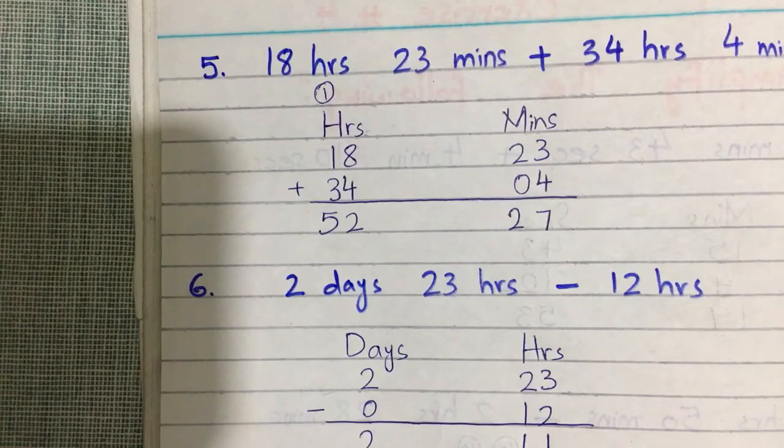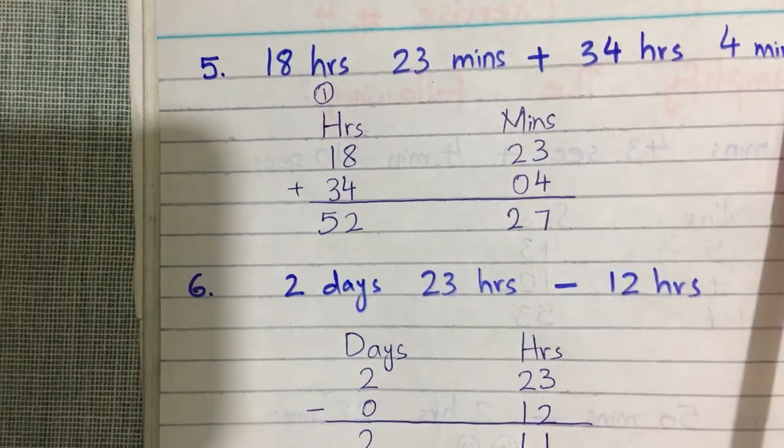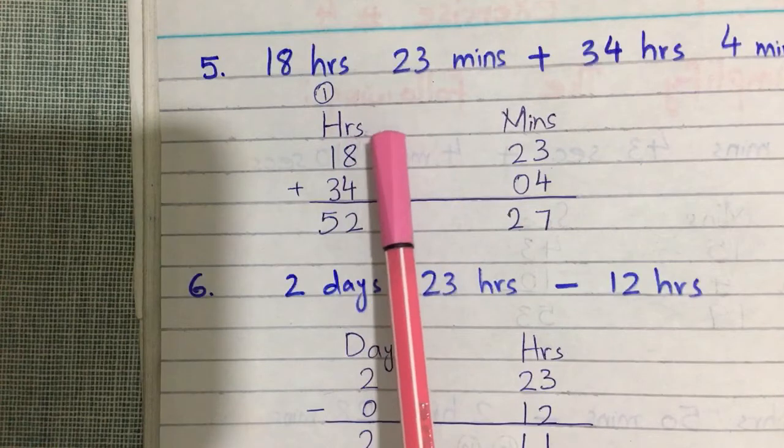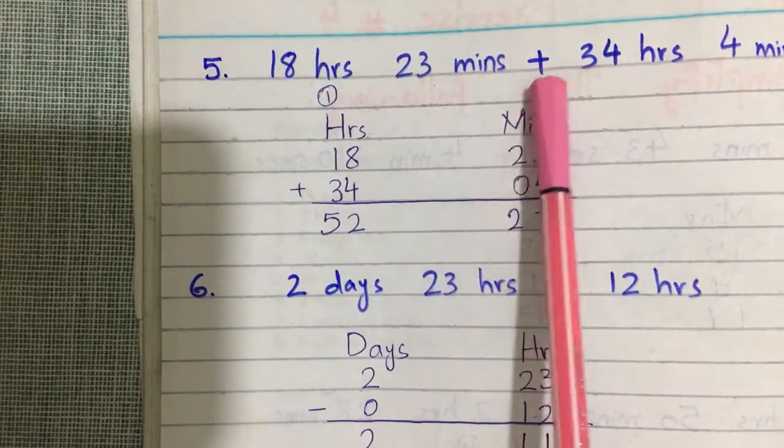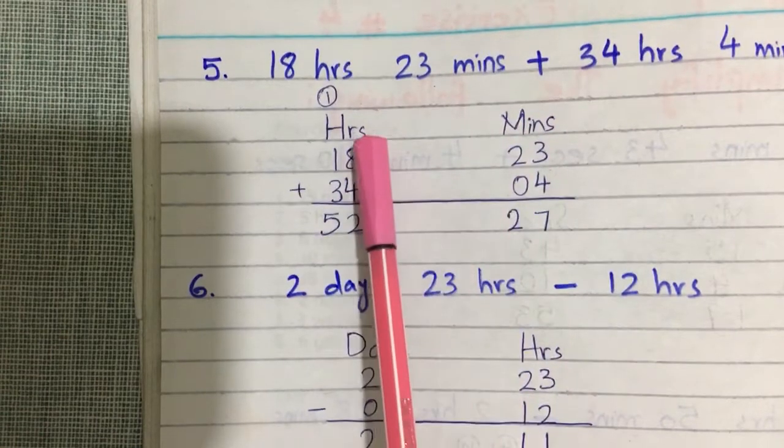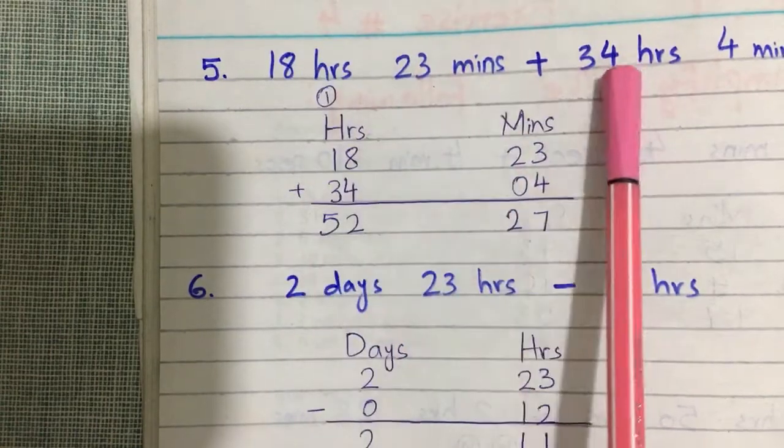Is 18 hours and 23 minutes plus 34 hours and 4 minutes. Sorry, this is addition. You have to add the hours together and the minutes together.